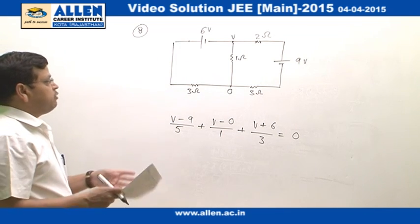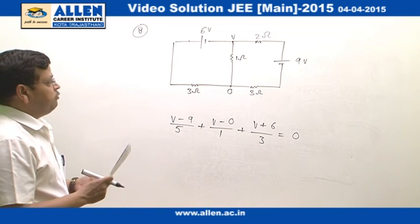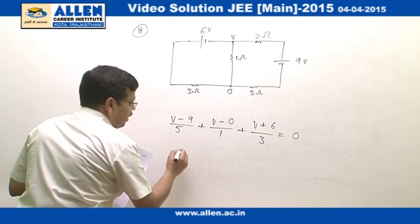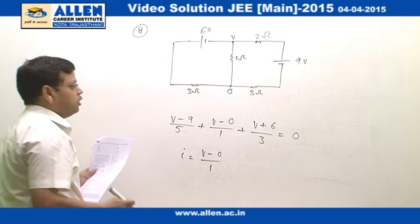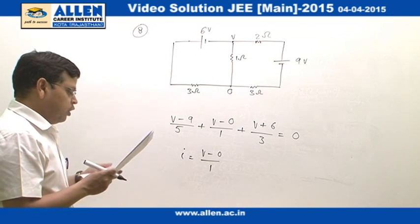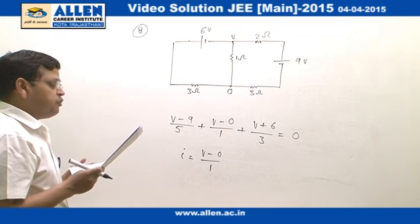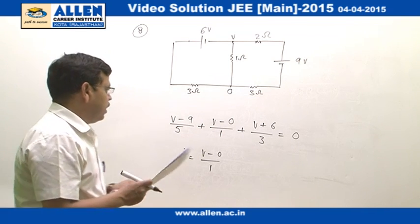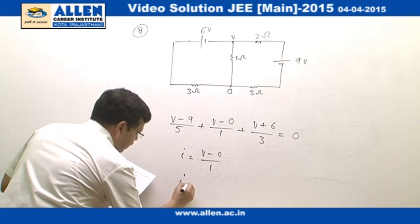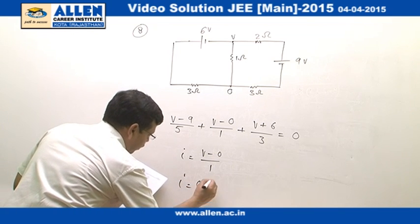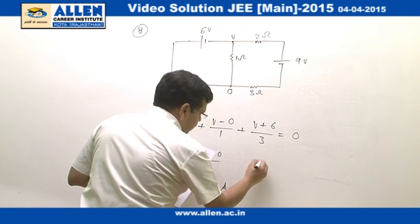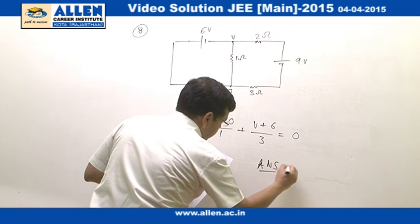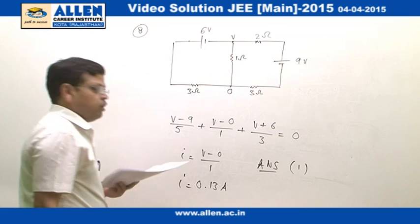From here we can get the value of V and we know current in the wire PQ is nothing but V minus 0 divided by 1. If we solve this equation, we will get the current is flowing from Q to P and the value of current is approximately 0.13 ampere. So, the correct answer for this question is answer 1.